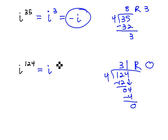This means i to the one twenty-fourth is the same as i to the zero, using the remainder as the new exponent, and we know anything to the zero power is 1. So i to the one hundred twenty-fourth power will also equal 1.